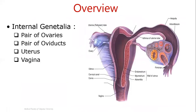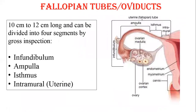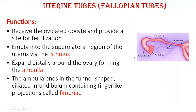Now coming to oviducts, fallopian tubes — about 10 to 12 centimeters long, divided into four segments starting from the uterine cavity: the intramural part, then the isthmus, then the ampulla, and the most lateral part in contact with the ovaries — the infundibulum. Its function is to receive the ovulated oocyte and provide a site for fertilization, then transport it to the uterus via the isthmus.